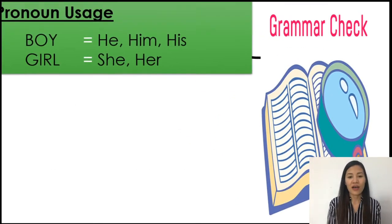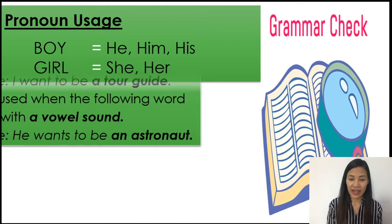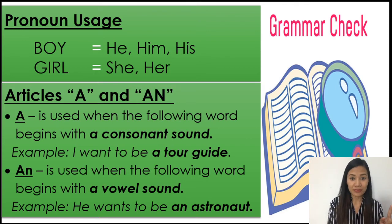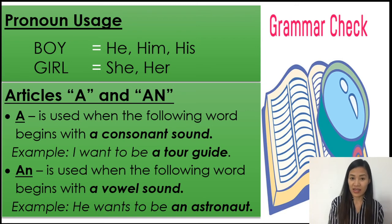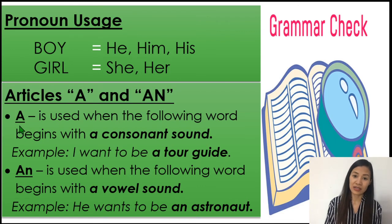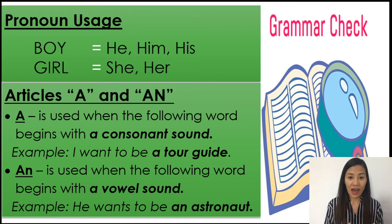Next one is articles. We have two articles to talk about. First is 'A' and the second is 'AN' — spelled A-N. Now, when do we use the article 'A'? How do we use the article 'A'?